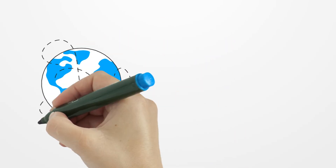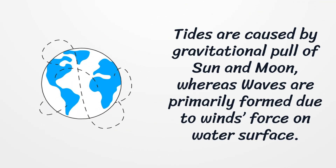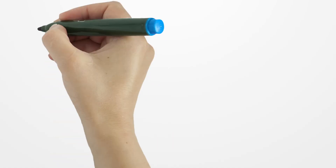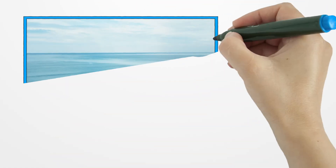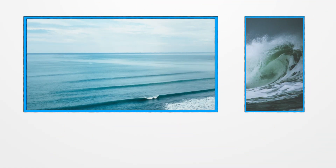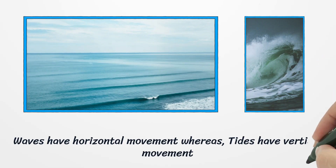Tides are caused by the gravitational pull of the sun and moon, whereas waves are primarily formed due to wind's force on the water surface. Waves have horizontal movement, whereas tides have vertical movement.